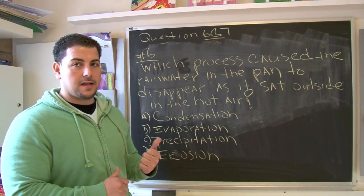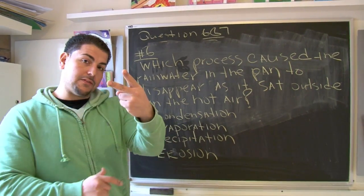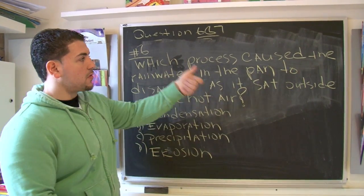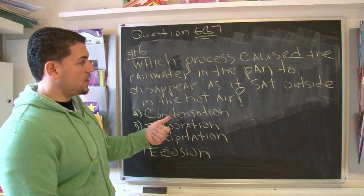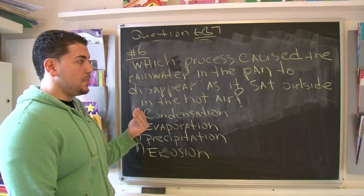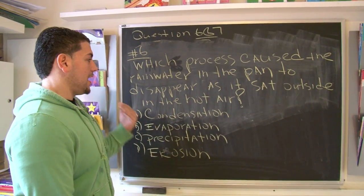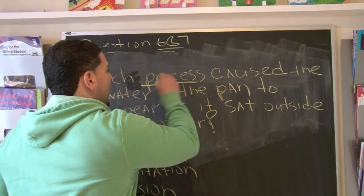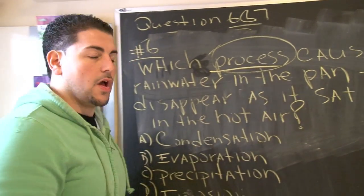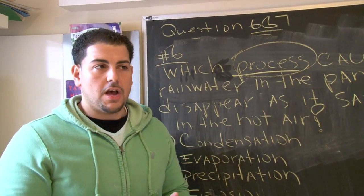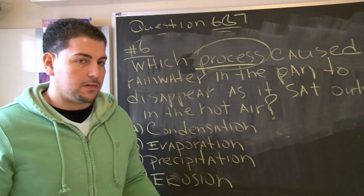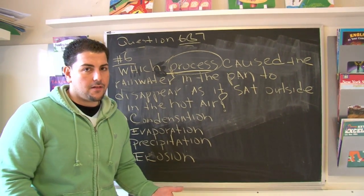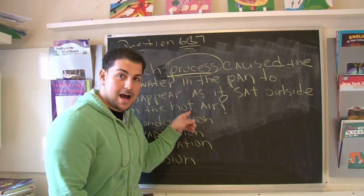Here's how they try to trick us on the test — they give us that paired reference, two questions to answer. Here's the first one: which process caused the rainwater in the pan to disappear as it sat outside in the hot air? Now remember, we're talking about key words. 'Process' is a key word — when they talk about process, they're talking about the chemical change. They already told us the water was sitting in hot air.